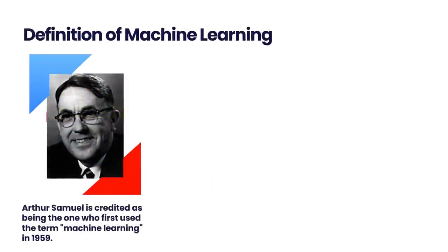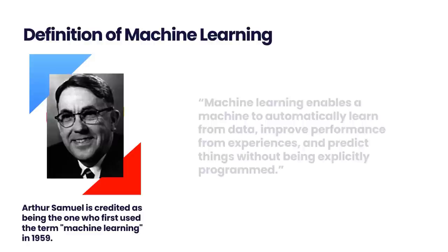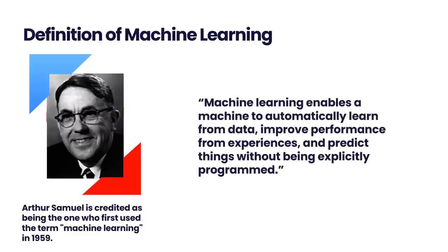Arthur Samuel is credited as being the one who first used the term machine learning in 1959. Machine learning enables a machine to automatically learn from data, improve performance from experiences, and predict things without being explicitly programmed. Machine learning algorithms construct a mathematical model with the assistance of previous data samples, which are referred to as training data. Computer science and statistics are brought together by machine learning, allowing for the creation of predictive models. The performance will increase in proportion to the amount of information that we provide.